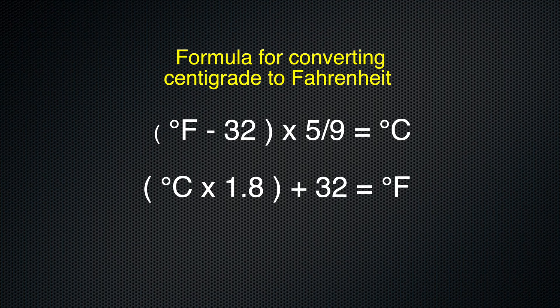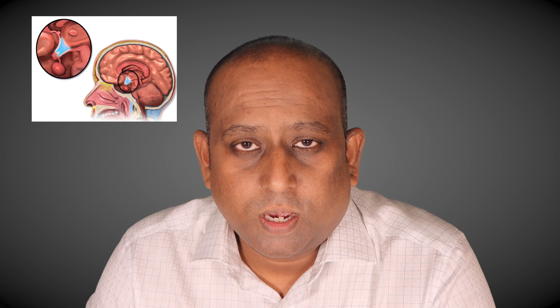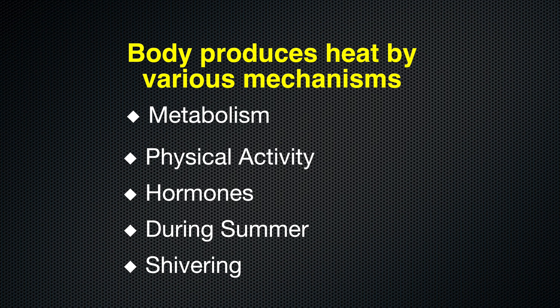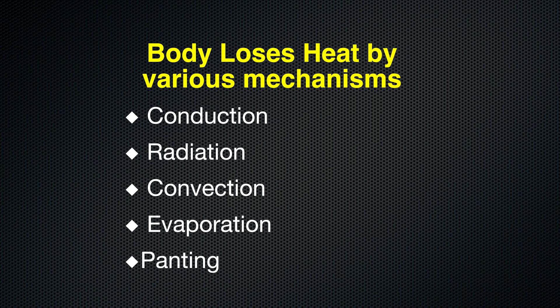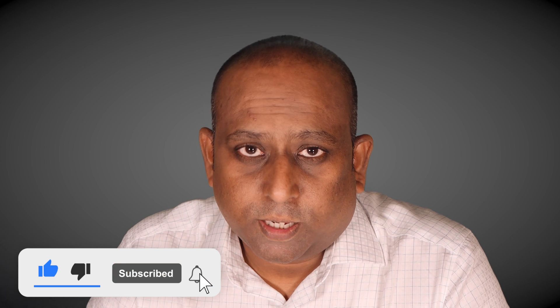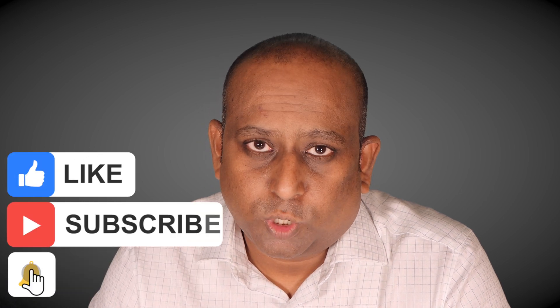We measure temperature either in the Celsius scale or the Fahrenheit scale, and a formula helps us convert from Celsius to Fahrenheit. What controls the human body temperature? It's the hypothalamus in the brain, which controls it by either increasing or decreasing heat production. An increase or decrease in your body temperature is sensed by the hypothalamus when blood passes through it. The set point at normal physiological conditions is 37°C or 98.6°F, and we call this normal human body temperature.